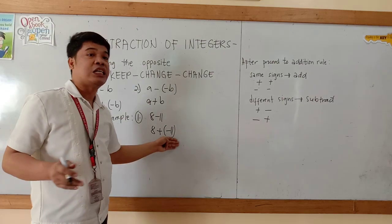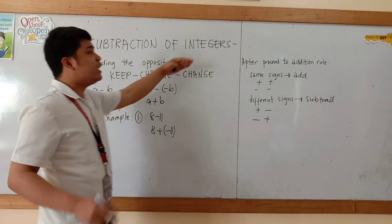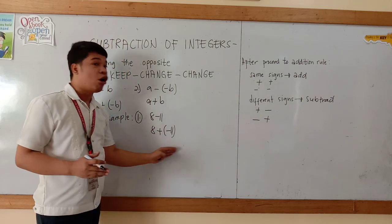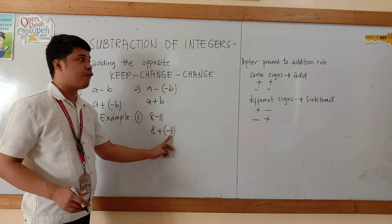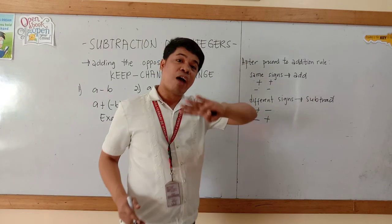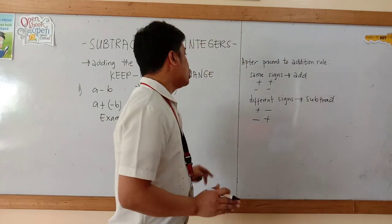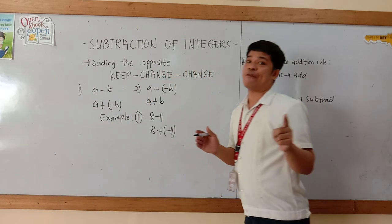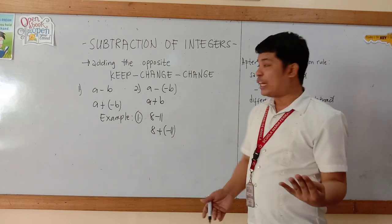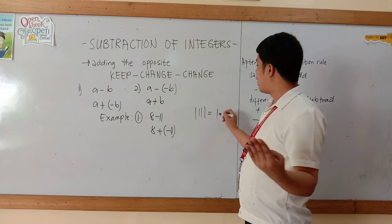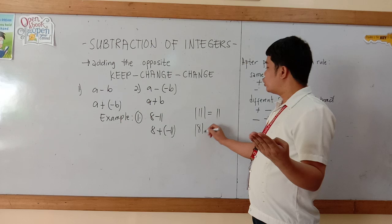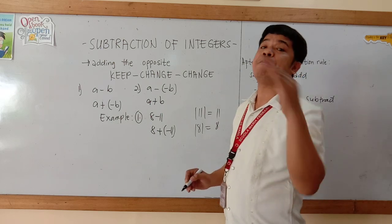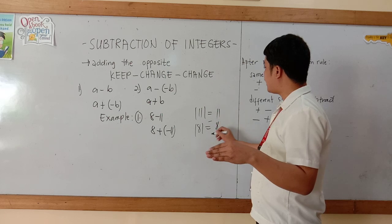The sign of 11 there is positive, so that will become negative 11. After changing the signs of the integers, we need to proceed to the addition rule. We need to see the signs of the integers — this is positive 8, this is negative 11, so therefore they have different signs. If they have different signs, we need to subtract the integers: 11 minus 8. We can also write the absolute value of 11, which is 11, and absolute value of 8 is 8. After giving the absolute values, we subtract 8 from the bigger number, which is 11: 11 minus 8 equals 3.